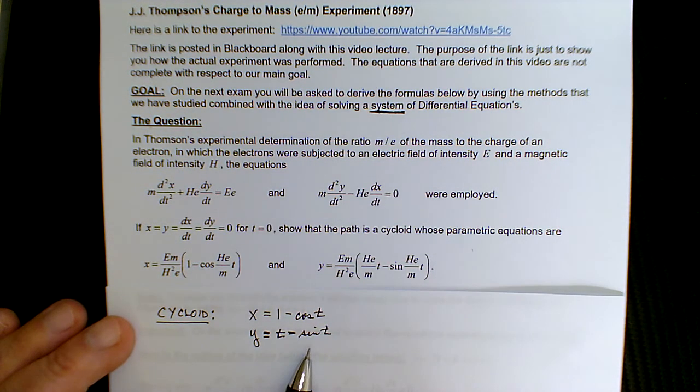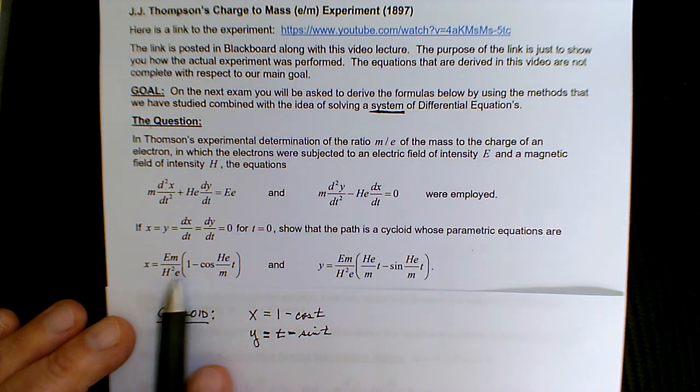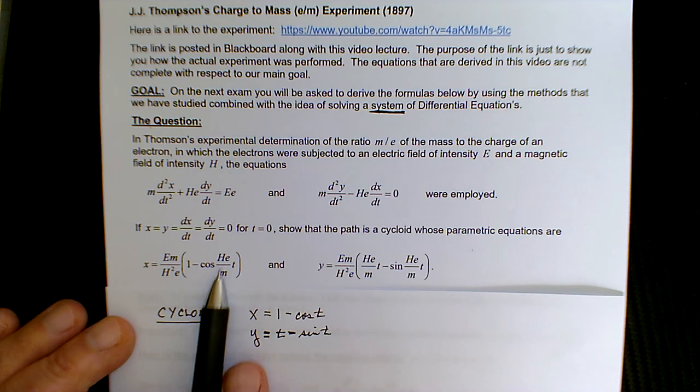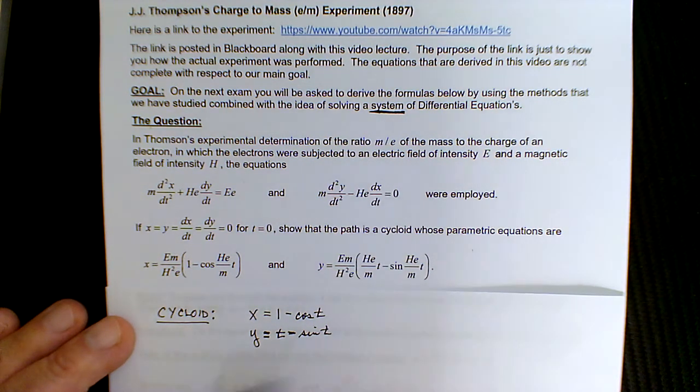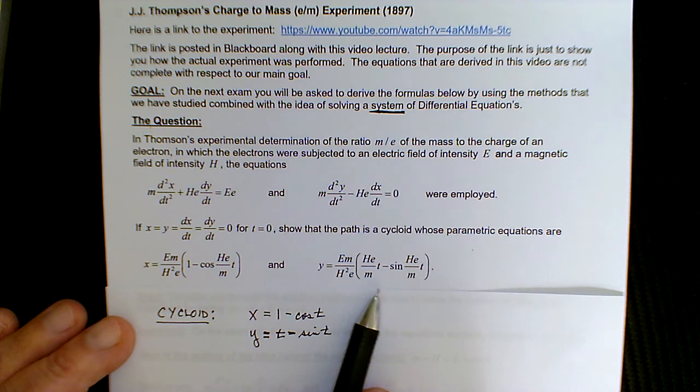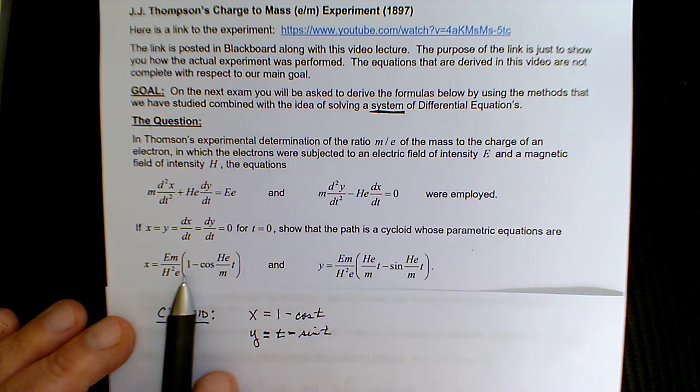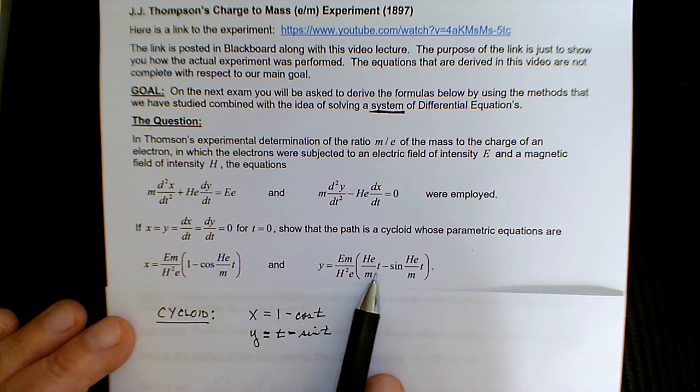And you can see that if you took out all the uppercase E, the lowercase m, your H, and your lowercase e, those are all constants. So if we took them all out of the picture, or let them be 1, which I'm going to do momentarily, and show you how to get these types of equations, then you can see how this would basically boil down to just 1 minus cosine t, and this would boil down to t minus sine of t.